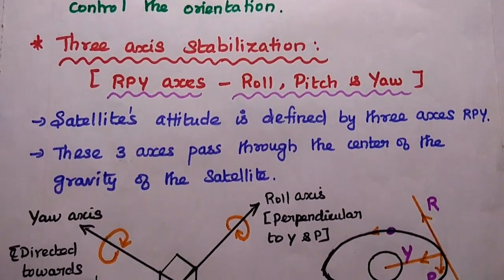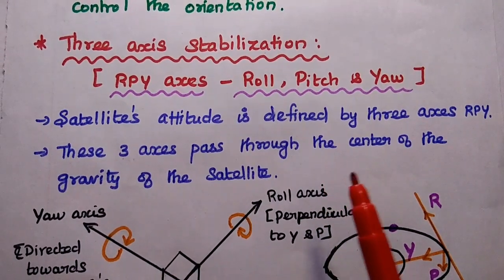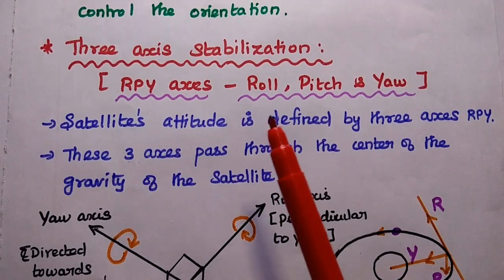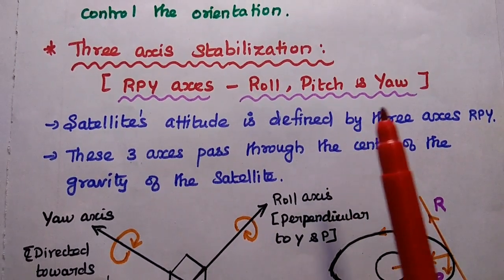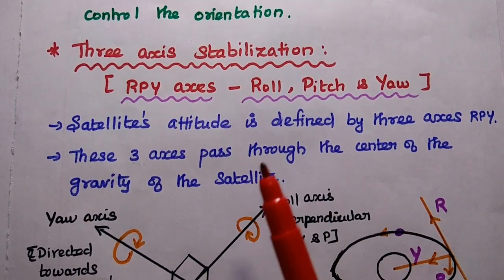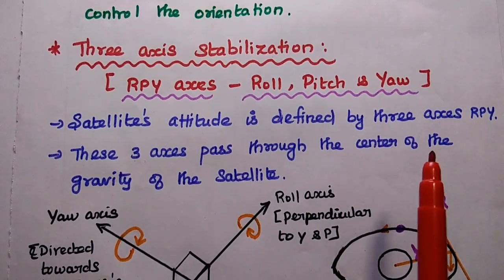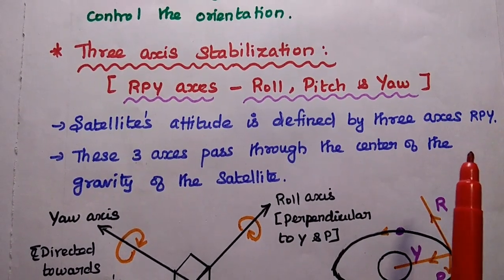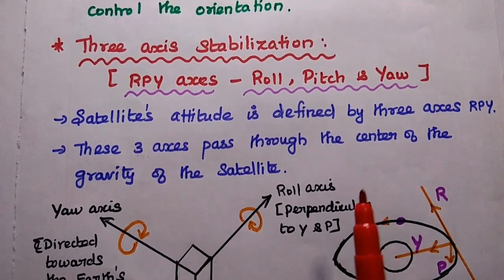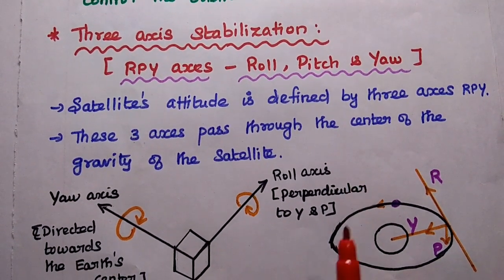In general, a satellite's attitude is defined by 3 axes: R, P, and Y — where R means Roll, P means Pitch, and Y means Yaw. These 3 axes should be stabilized to maintain the orientation in the proper direction, and they all pass through the center of gravity of the satellite.